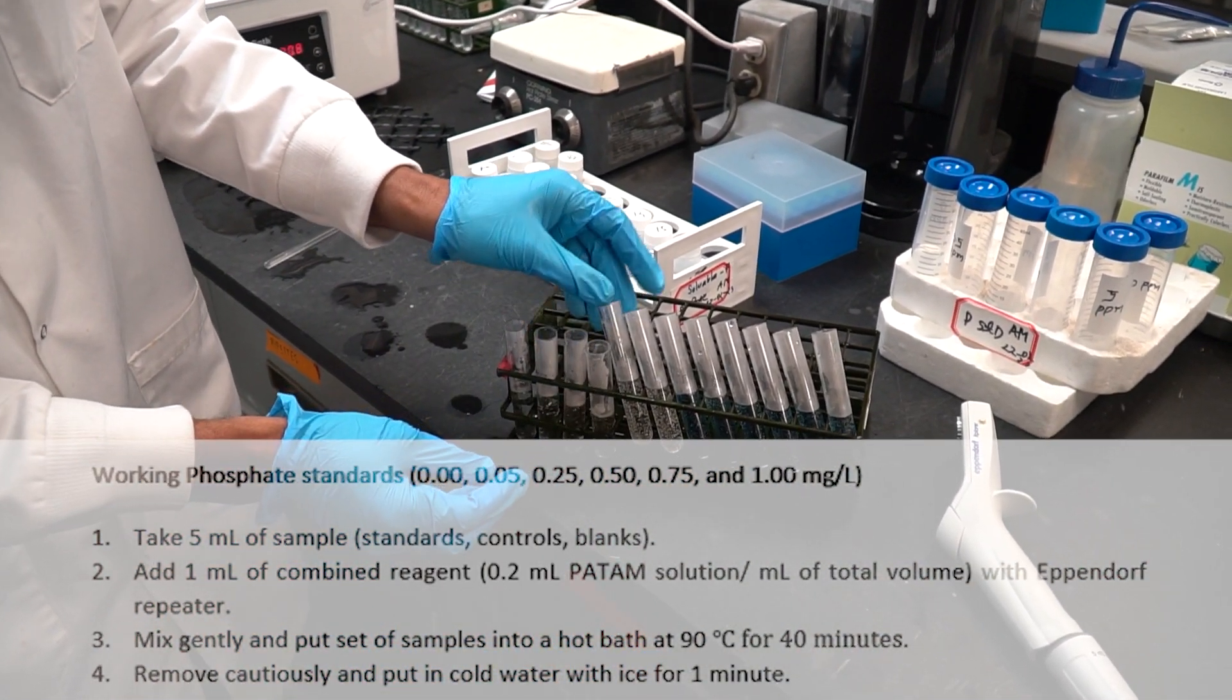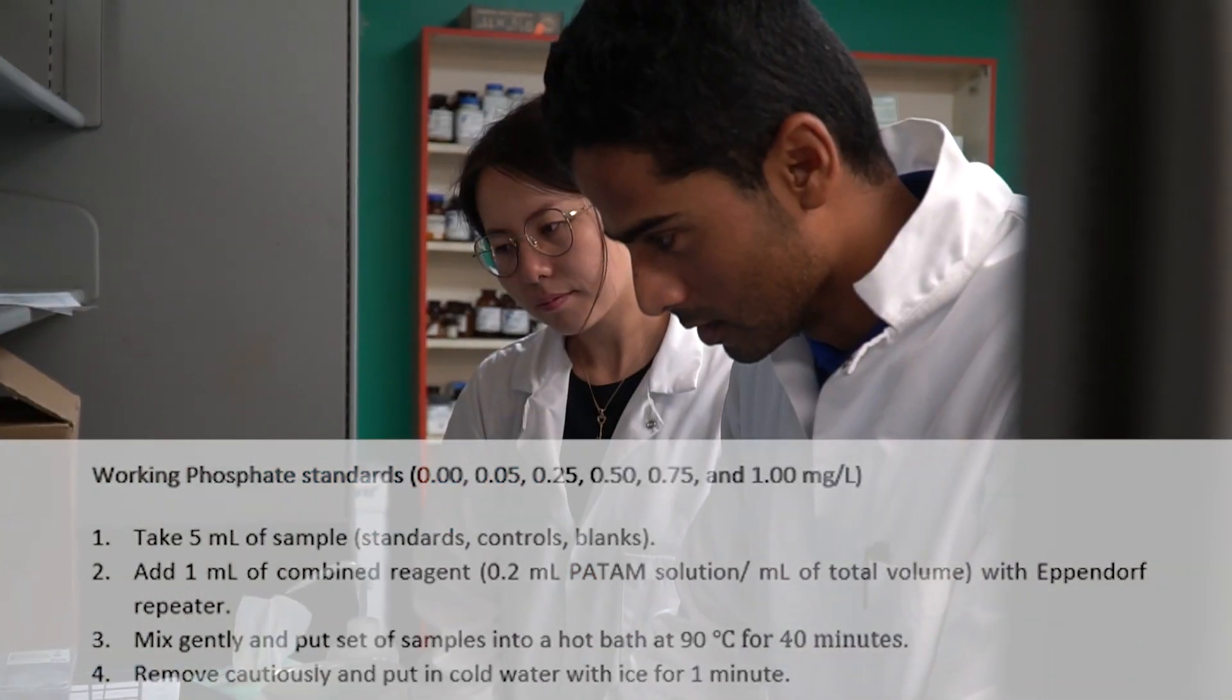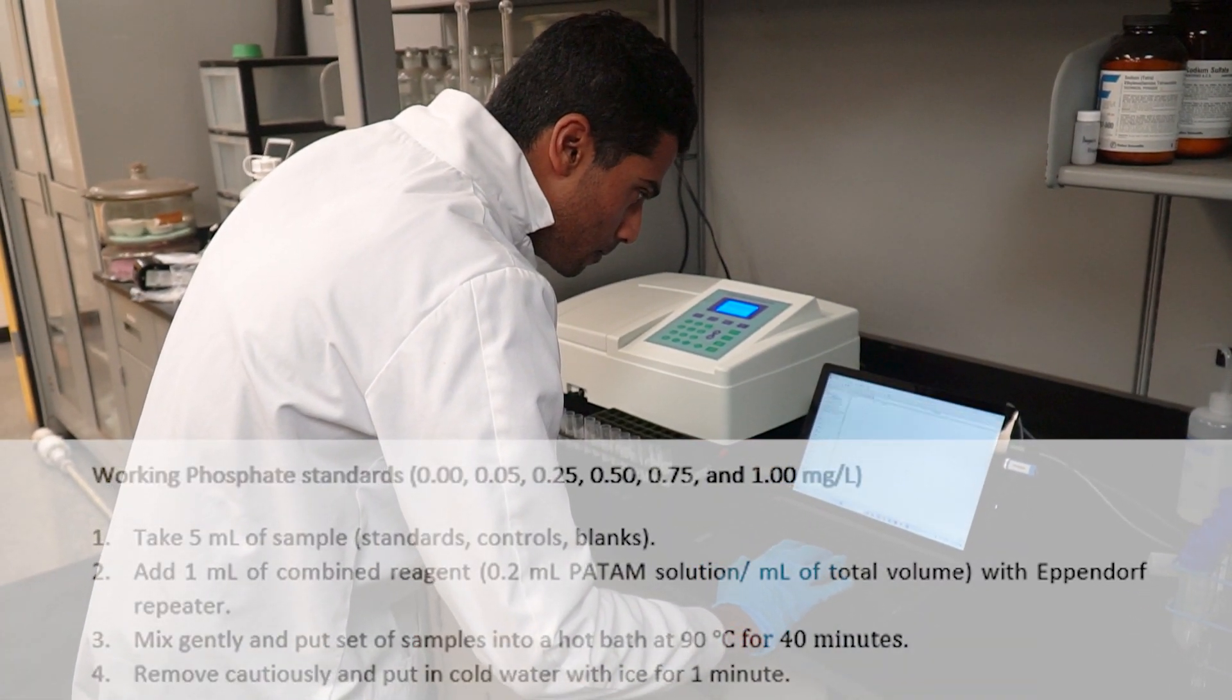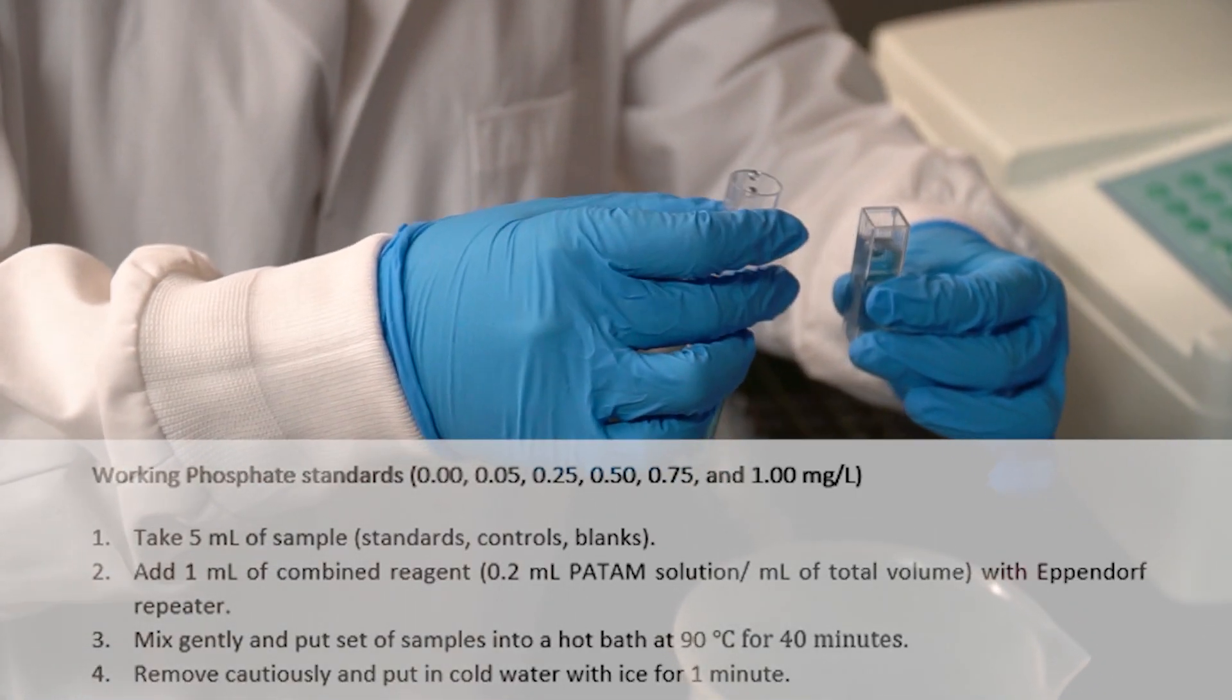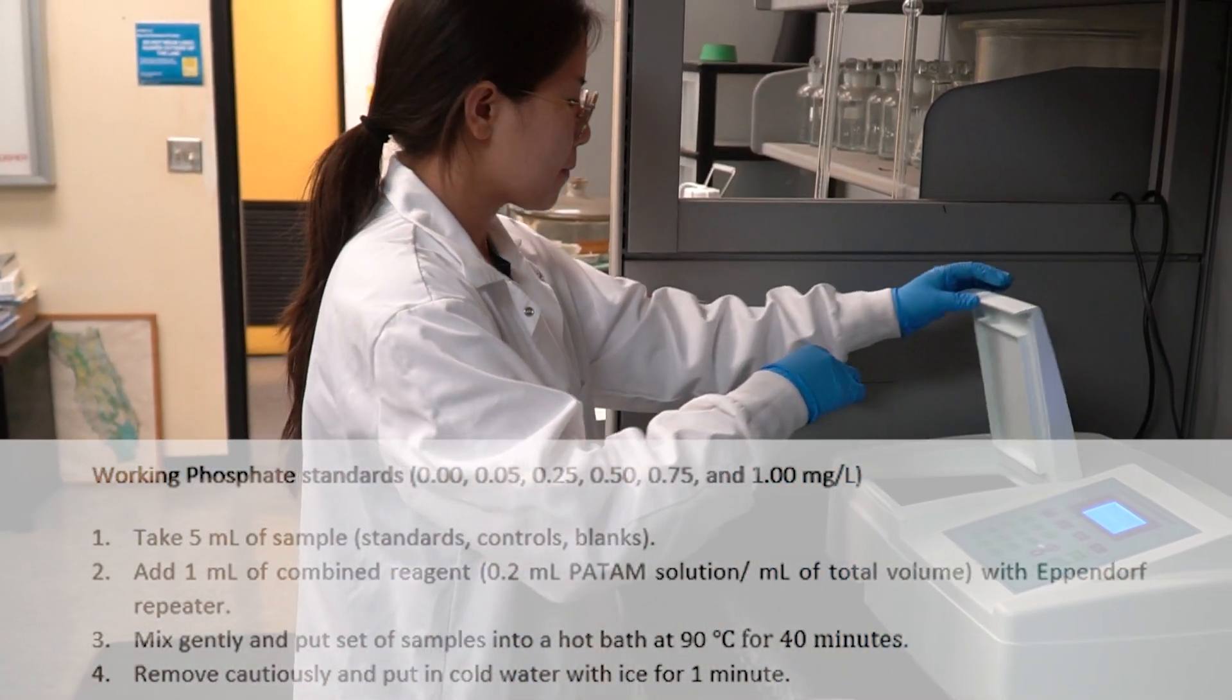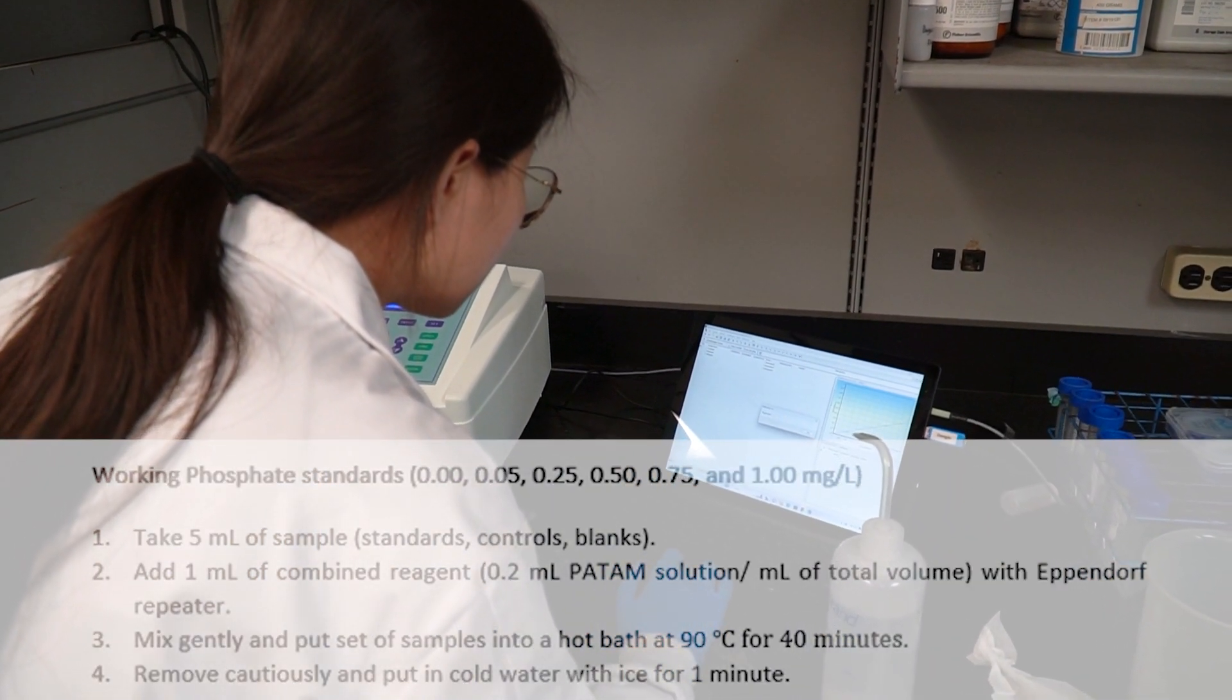Then, we have to mix the samples and put the samples into the hot bath at 90 degrees Celsius for 40 minutes. By doing this, a color will develop. Then, we have to use spectrophotometer with a wavelength of 880 nanometer to analyze soluble P.